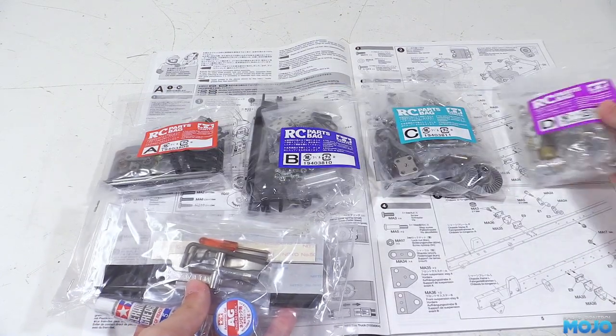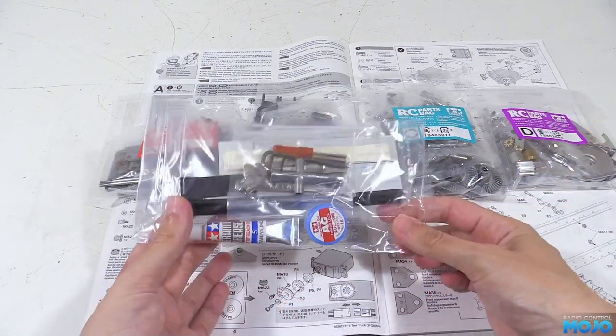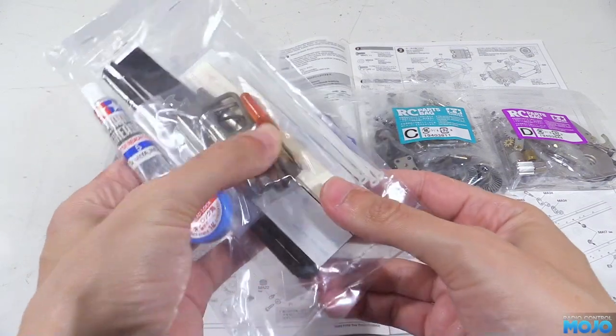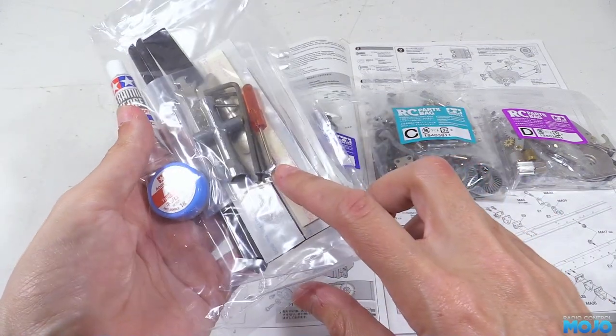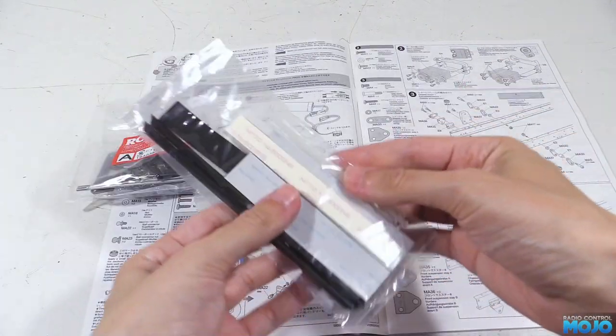Plus we have an unmarked bag with the extra bits like the tools, grease and some threadlock. We got some foam strips, servo tape, spiral wrap and zip ties.